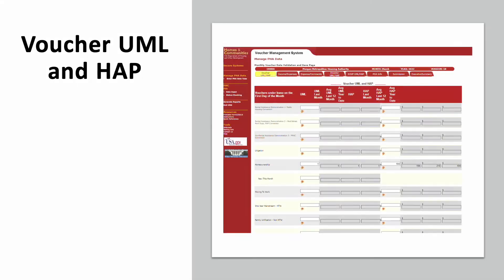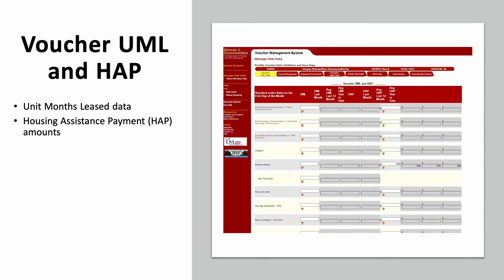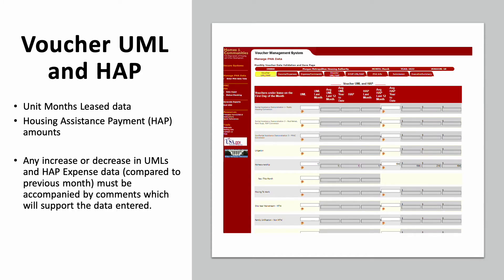The first tab is titled Voucher UML and HAP. This tab is where PHAs report various data points related to their voucher use, including unit months leased information and housing assistance payment funding amounts. Any increase or decrease in UMLs or HAP expenses from the previous month must be accompanied by comments which support the data entered. Comments must be clear and concise.